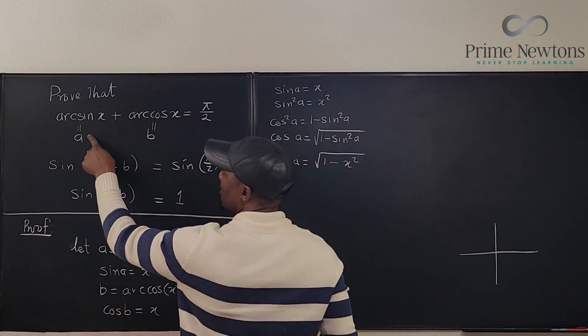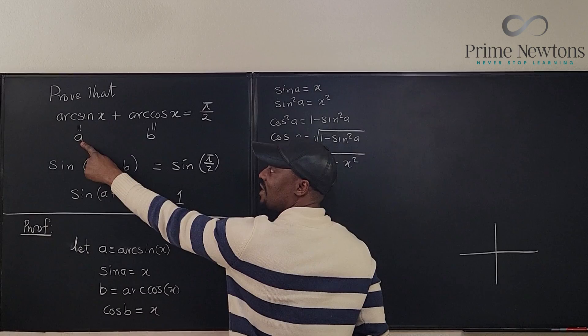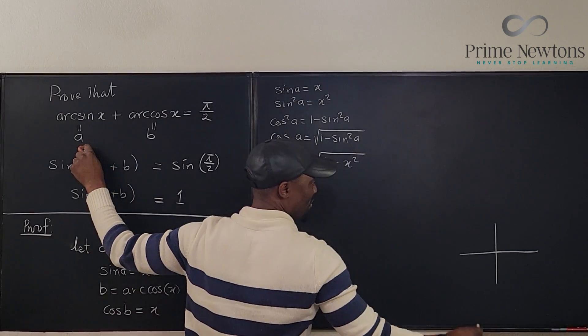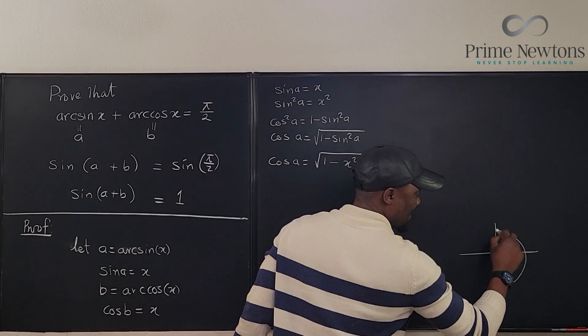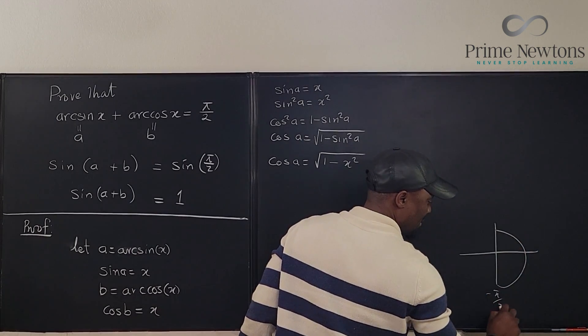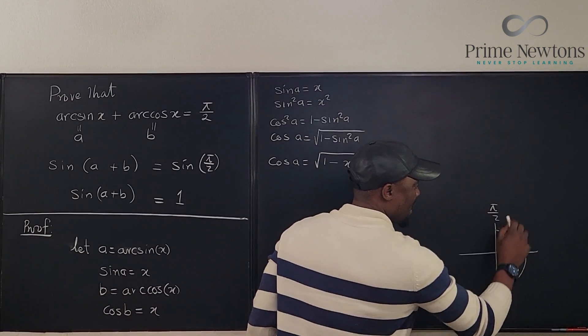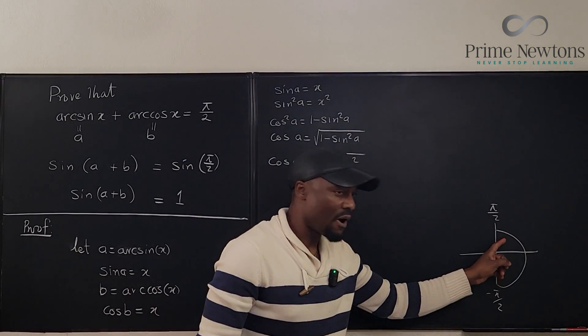So if you look at your quadrants, what comes out of arc sine, anything that comes out of this has to be from negative pi over 2 to pi over 2. It's here. This is negative pi over 2. This is pi over 2.